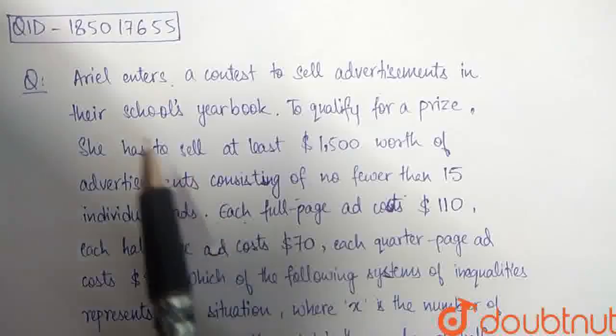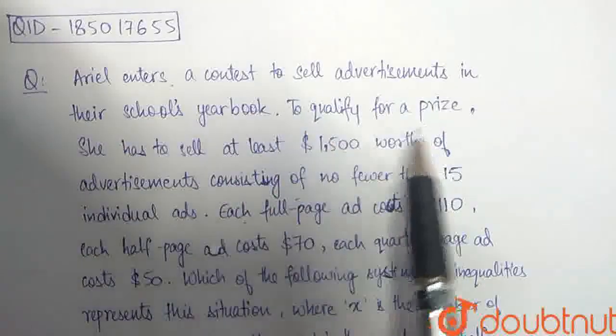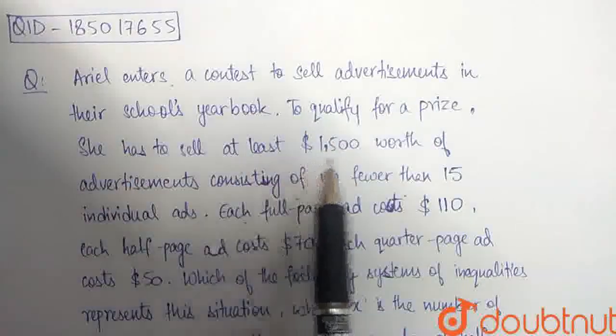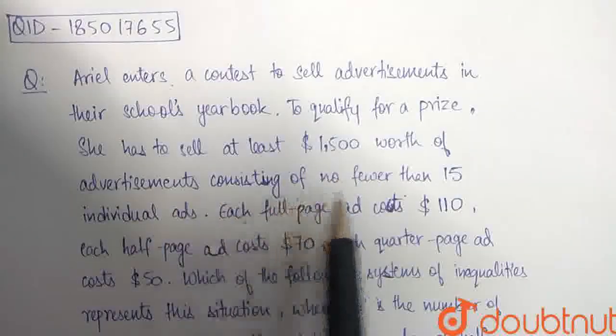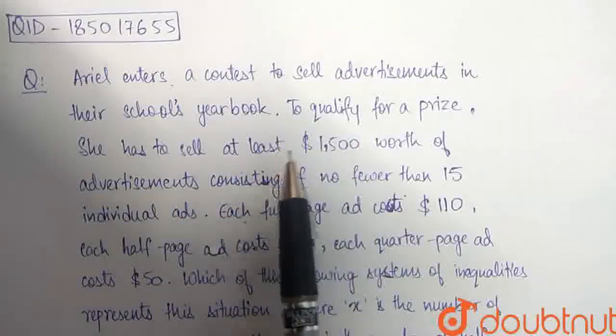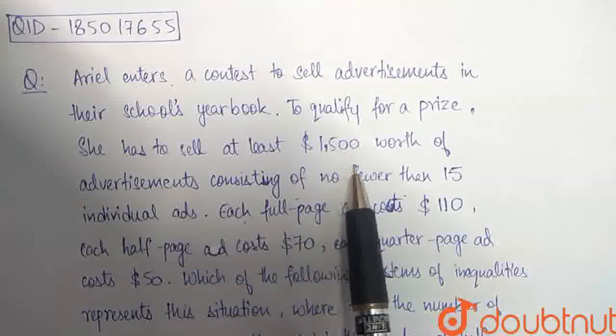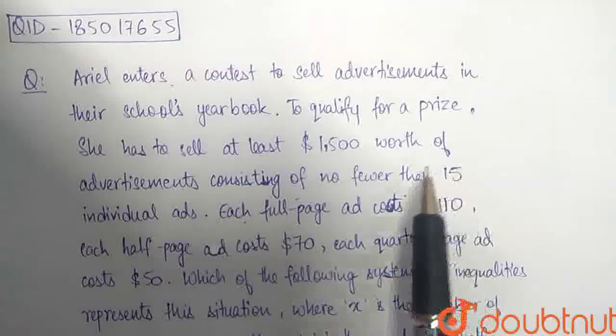The question here says, Ariel enters a contest to sell advertisements in their school's yearbook. To qualify for a prize, she has to sell at least $1,500 worth of advertisements, consisting of no fewer than 15 individual ads. So, the total cost of ads should be at least $1,500, and the number of ads should be at least 15.